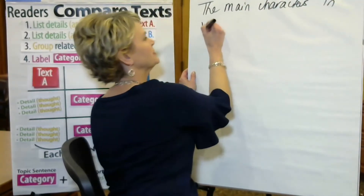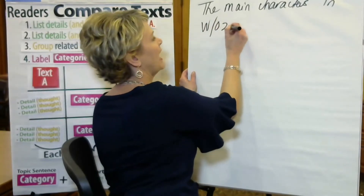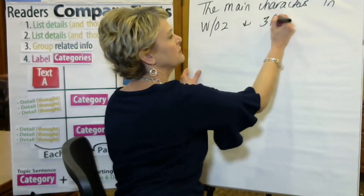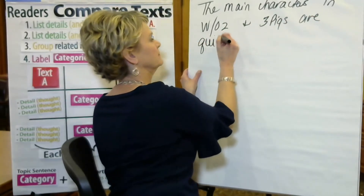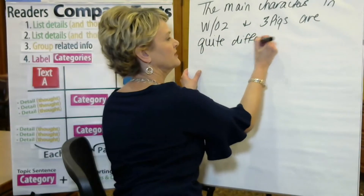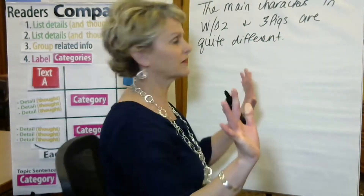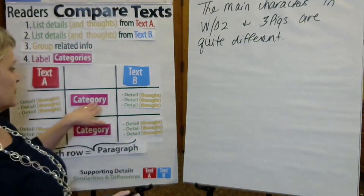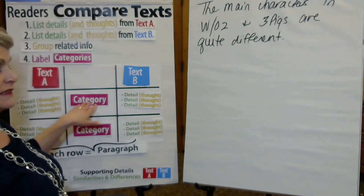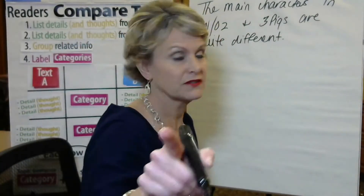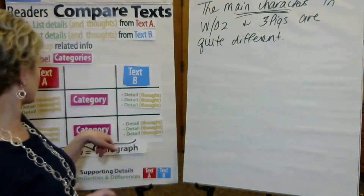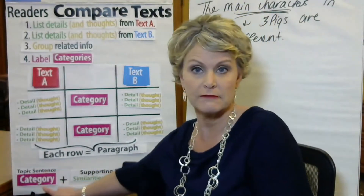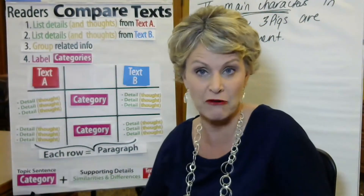So now I could just start this paragraph by saying something very broad, but I have to use the word 'main characters' because that's the category and the category has to be named in the topic sentence. I could say something like: 'The main characters in the Wizard of Oz and the Three Little Pigs are quite different.' The category is main characters and I've said it in the first sentence — the topic sentence for the paragraph that will now follow.